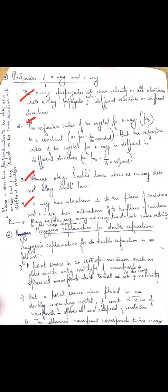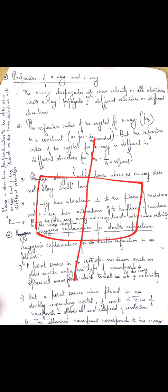Now, I want you to note two more extra points related to the ordinary ray. If this is my crystal and this is the optic axis of the crystal, then if a ray of unpolarized light is incident along the optic axis, the ordinary and extraordinary rays will travel in the same direction with the same velocity along the optic axis. That means they coincide, and there is no double refraction along the optic axis. For double refraction to be visible, there must be two refracted rays traveling with different velocities in different directions.